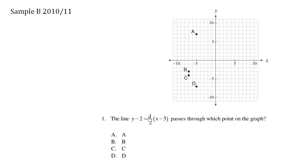The line y minus 2 equals 1 half x minus 5 passes through which point on the graph? So we recognize this line equation as y minus y₁ equals m, the slope, x minus x₁.